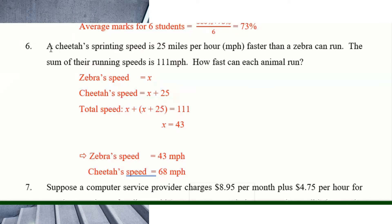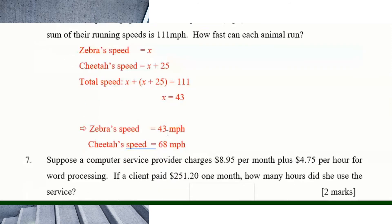Algebra is a short topic but exam questions can be tricky. Number six: a cheetah's sprinting speed is 25 miles per hour faster than a zebra, and the sum of their speeds is 111. Call the zebra x; the cheetah is x plus 25. So x plus (x plus 25) equals 111. Solve to find x: the zebra is 43 mph and the cheetah is 68 mph. Remember to include units — miles per hour.